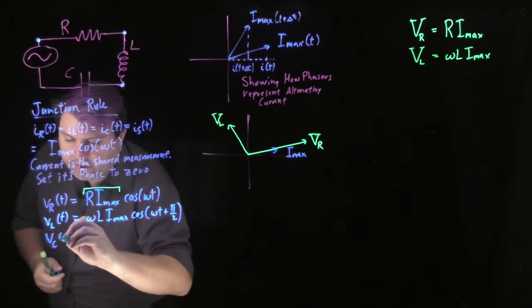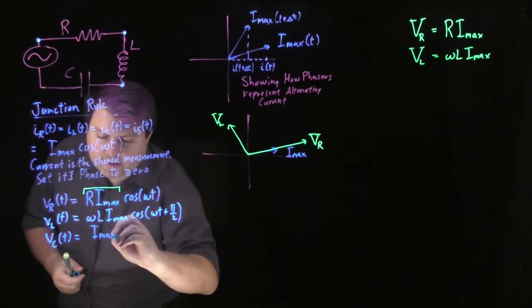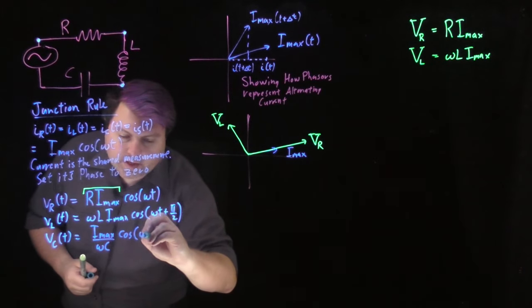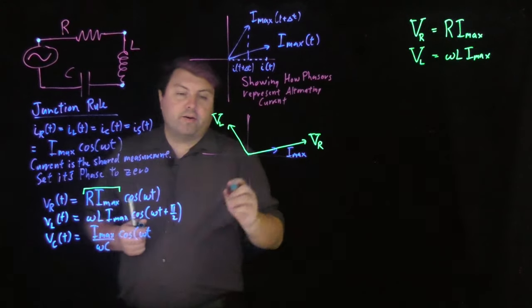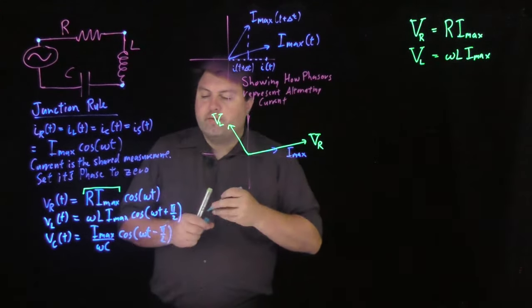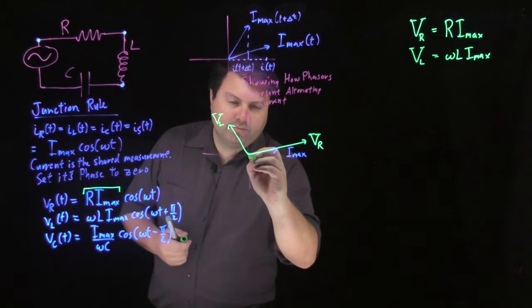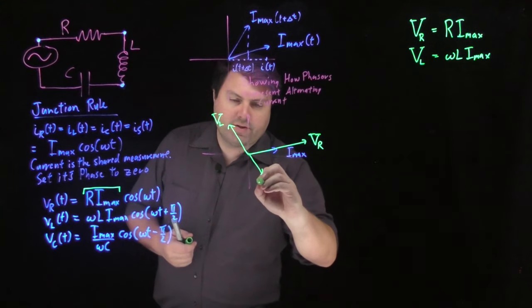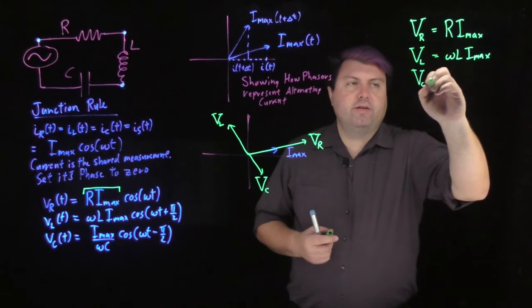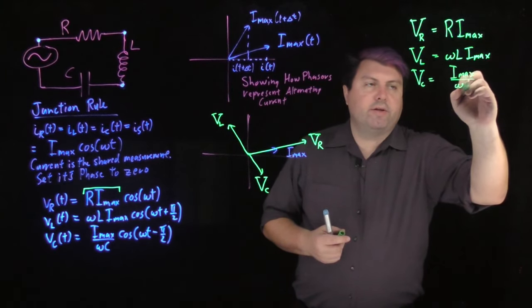And we have, lastly, the voltage of our capacitor as a function of time is capital I_max over omega C cosine. And then our capacitor is 90 degrees behind the current, minus pi over 2. So this is then our capital V sub C. And we have then capital V sub C is capital I_max over omega C.